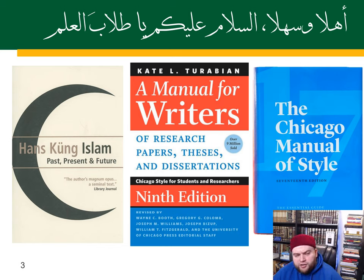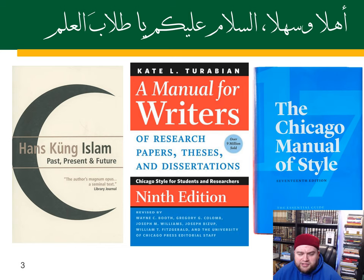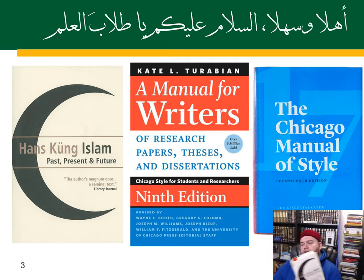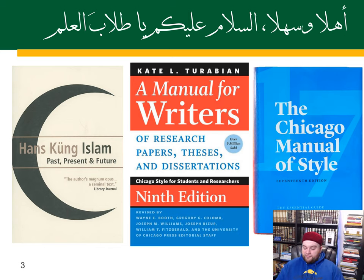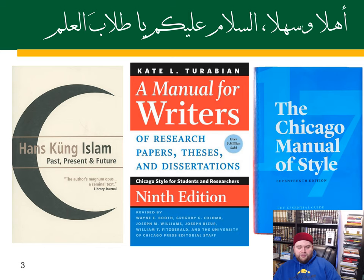I'm going to read some passages from Hans Küng's Islam: Past, Present, and Future, which is translated from German. He's a very famous Christian theologian and Orientalist. His book is called a magnum opus because it's such a huge, massive, encyclopedic book. A lot of what he says doesn't contradict traditional Islamic history, so it's quite a useful reference book — but anything from an Orientalist you take with a grain of salt. He has a really good summary of the Khulafa ar-Rashideen.